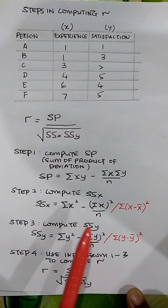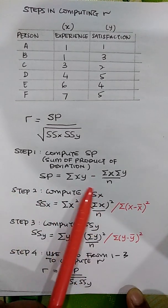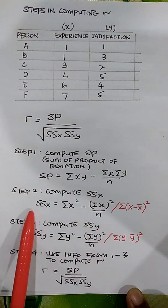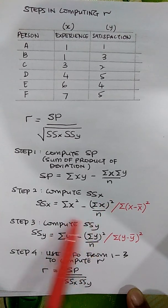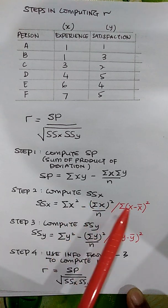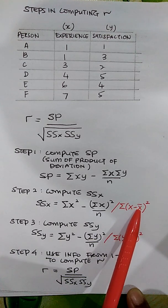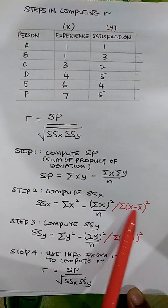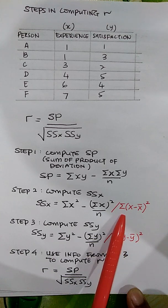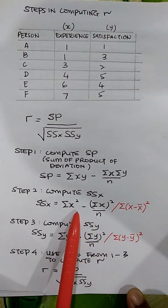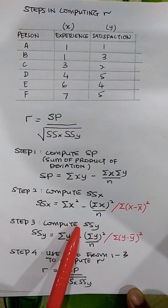Step two is to compute the sum of squares of X. Sum of squares X equals sum of X² minus (sum of X)² divided by n. This is the computational formula. You can also calculate sum of squares X using the definitional formula: sum of (X minus X-mean)². You can use either formula.